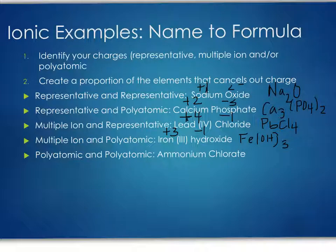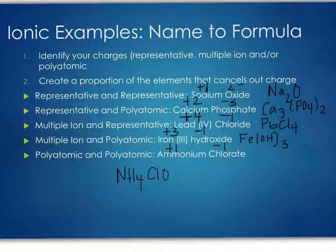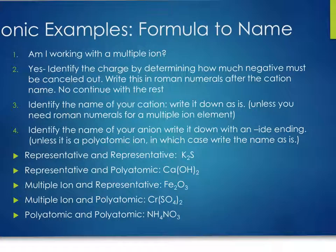You may also have a combination of two polyatomic ions. That only happens when you have ammonium, because ammonium is the only positive polyatomic ion. For ammonium chlorate: ammonium has a plus one charge, chlorate has a minus one charge. So the formula is NH₄ClO₃ — ammonium (NH₄) with chlorate (ClO₃) tacked on.